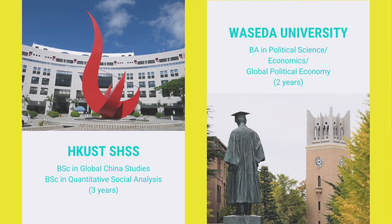Our school also partners with Waseda University in Japan to collaboratively offer a dual degree program to our undergraduate students. Students spend the first three years completing their undergraduate studies in the School of Humanities and Social Science at UST and two years studying for a bachelor's degree at Waseda. So students obtain two bachelor's degrees from UST School of Humanities and Social Science and Waseda University within five years.